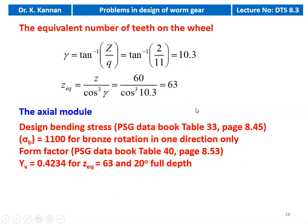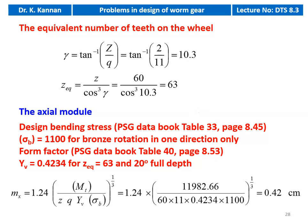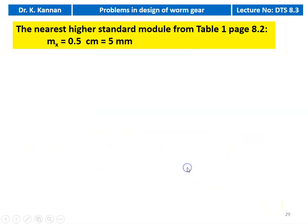The form factor from table number 40, page 8.53: Y_b = 0.4234 for Z_eq = 63 and 20-degree full depth pressure angle. The axial module MX = [1.24 × MT_design / (Z × Q × Y_b × sigma_b)]^(1/3) = [1.24 × 11,982.66 / (60 × 11 × 0.4234 × 1100)]^(1/3) = 0.42 cm. We take the nearest higher standard module from table 1, page 8.2: MX = 0.5 cm (5 mm).